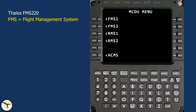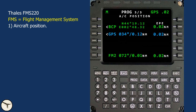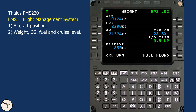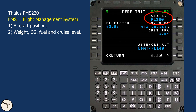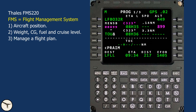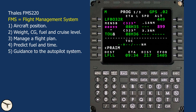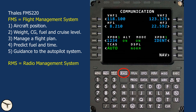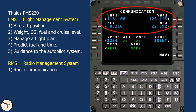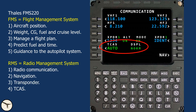The FMS has the following functions: determine the position of the aircraft; manage aircraft weight, center of gravity, fuel quantity and cruise level; manage a flight plan; predict fuel and time along the flight plan; and provide lateral and vertical navigation guidance to the autopilot system. The RMS is used to control radios, nav aids, transponder and TCAS.